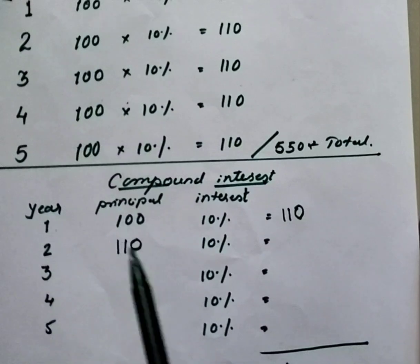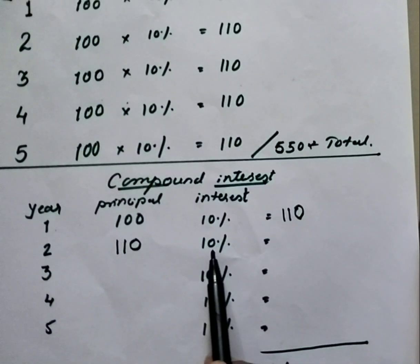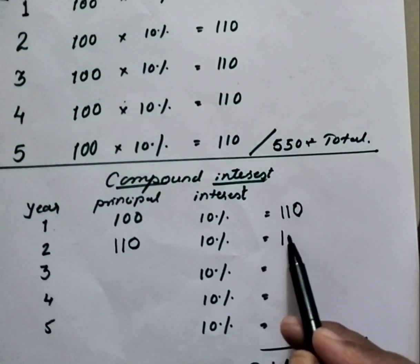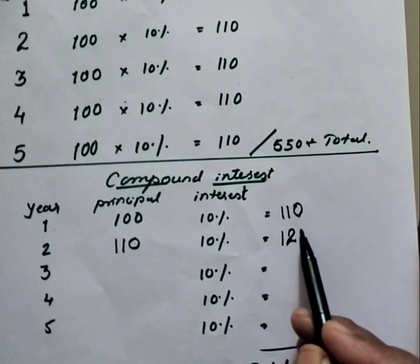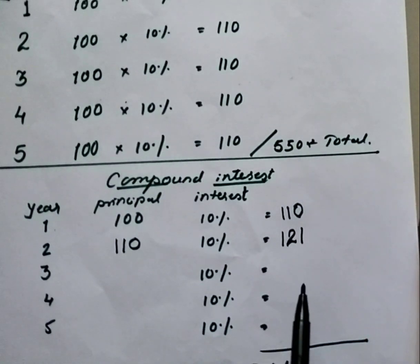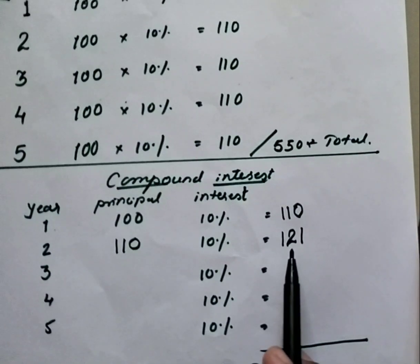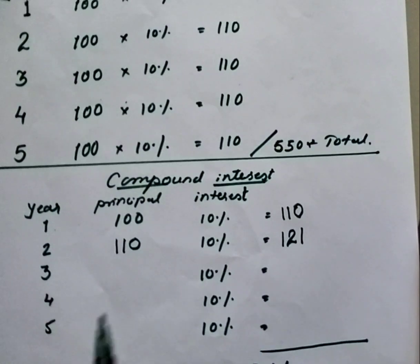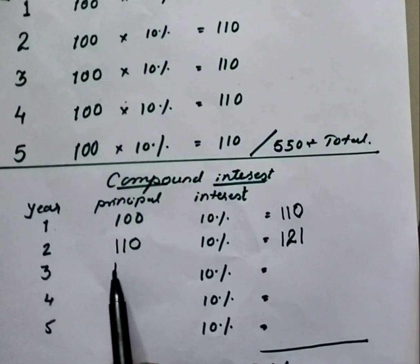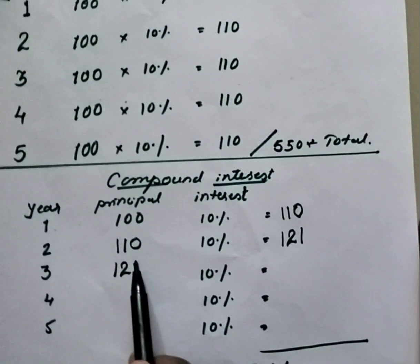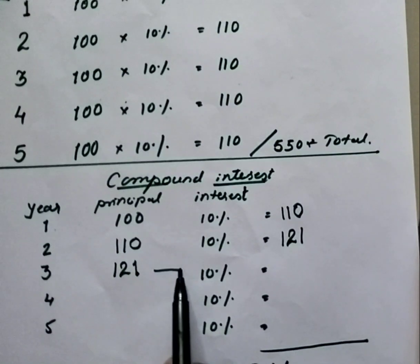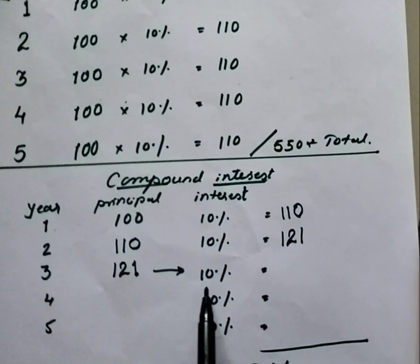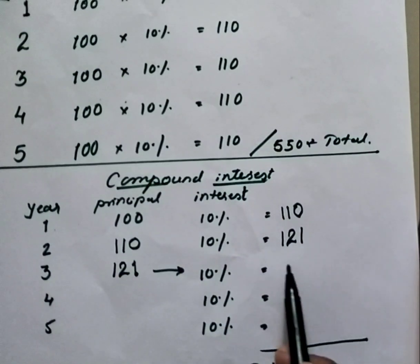He will get 10 percent interest on 110 rupees, so when you solve this, that person will get 121 rupees for the second year. This is compound interest. Now 121 rupees is the principal for the third year, with an interest rate of 10 percent.